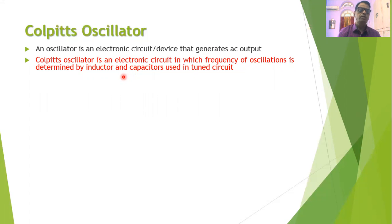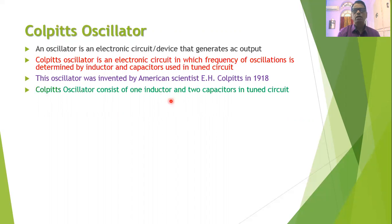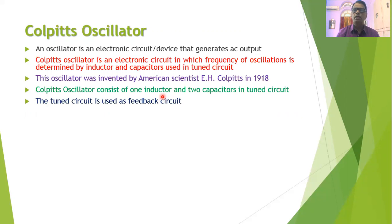The frequency of oscillations is decided by the inductor and capacitors used in the tuned circuit. Colpitts oscillator was originally invented by American scientist E.H. Colpitts in 1918, which is why his name is given to this oscillator. Its LC tuned circuit serves as the feedback circuit, using one inductor and two capacitors — unlike the Hartley oscillator which uses two inductors and one capacitor.